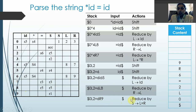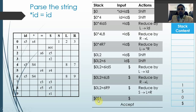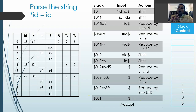Now it is state 9 on dollar, which means reduce by the 1st production: S → L = R. There are 3 grammar symbols on the right-hand side, so we remove 6 symbols. After removing 6 symbols down to state 0, we push S in place of L = R. State 0 on S gives goto state 1. Now the input has only the dollar end-marker, meaning we have read all characters. State 1 on dollar is accept — the string has been accepted.